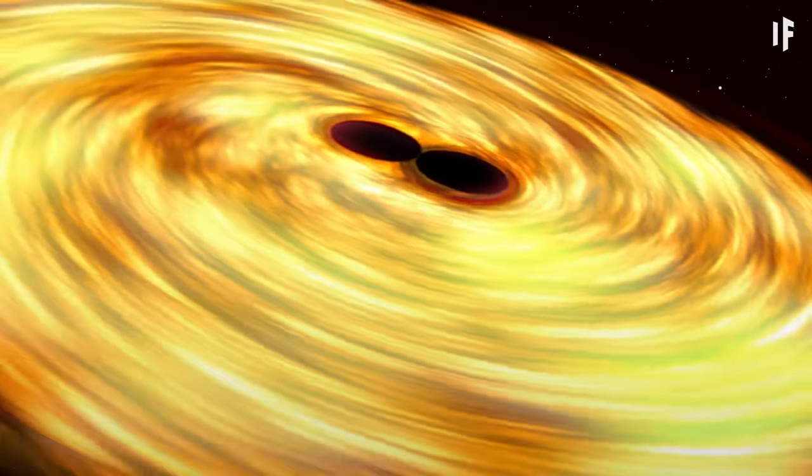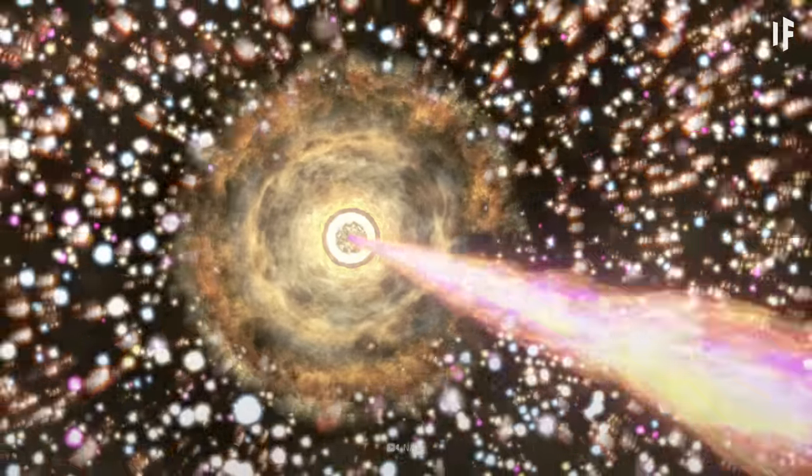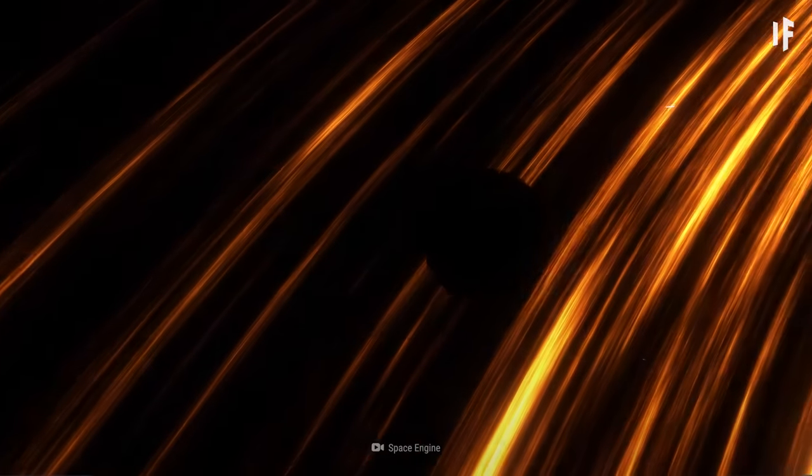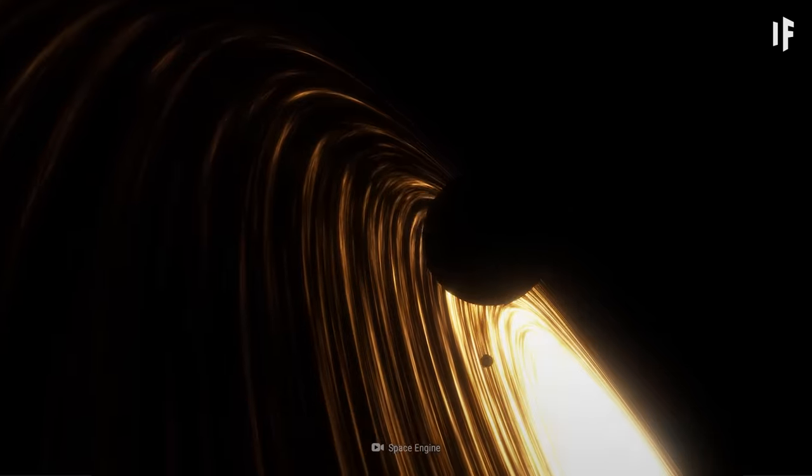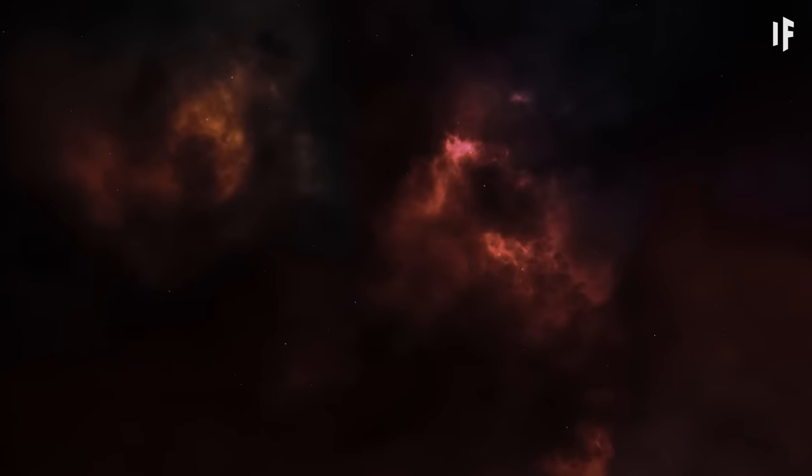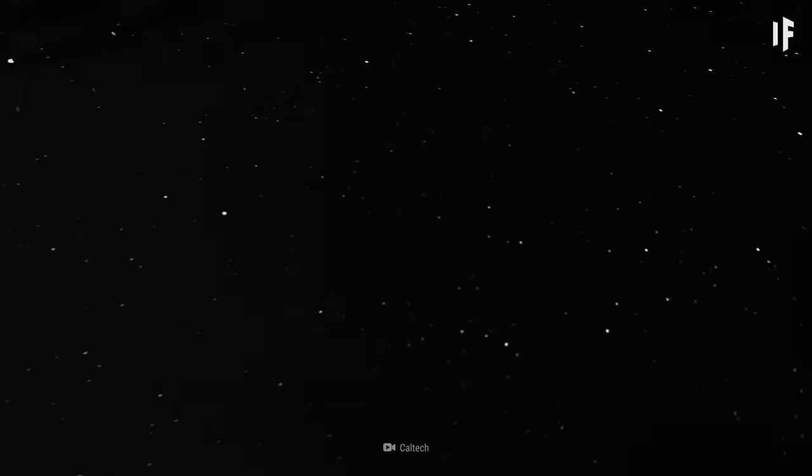But wait, there's something I haven't mentioned yet. The excess energy from the collision would be expelled back into the Universe as gravitational waves. As I mentioned before, colliding black holes can change the shape of the space around them. They do it by rippling this space with gravitational waves.